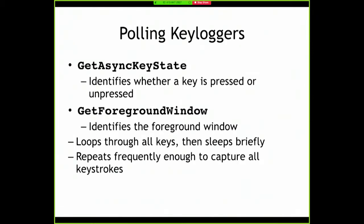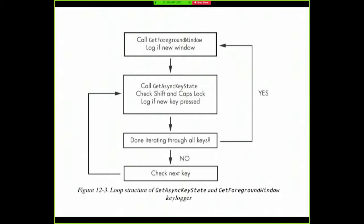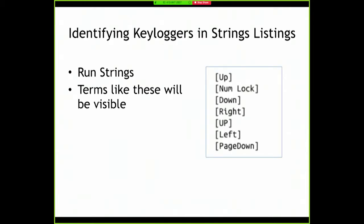You can get GetAsyncKeyState to tell you whether each key is up or down. You can identify the foreground window, because another thing you should record with keystroke logging is which window they were typing into - to tell which mess is their password versus something else. These are API calls you'll see. You get a log of the new window, figure out what key to record, then iterate through to the next key. It's pretty clumsy - you go through keys to see if a key is up, down, or changed state. The output will have strings with indicators of special keys, and unless they encode it somehow, it might be pretty easy to parse.